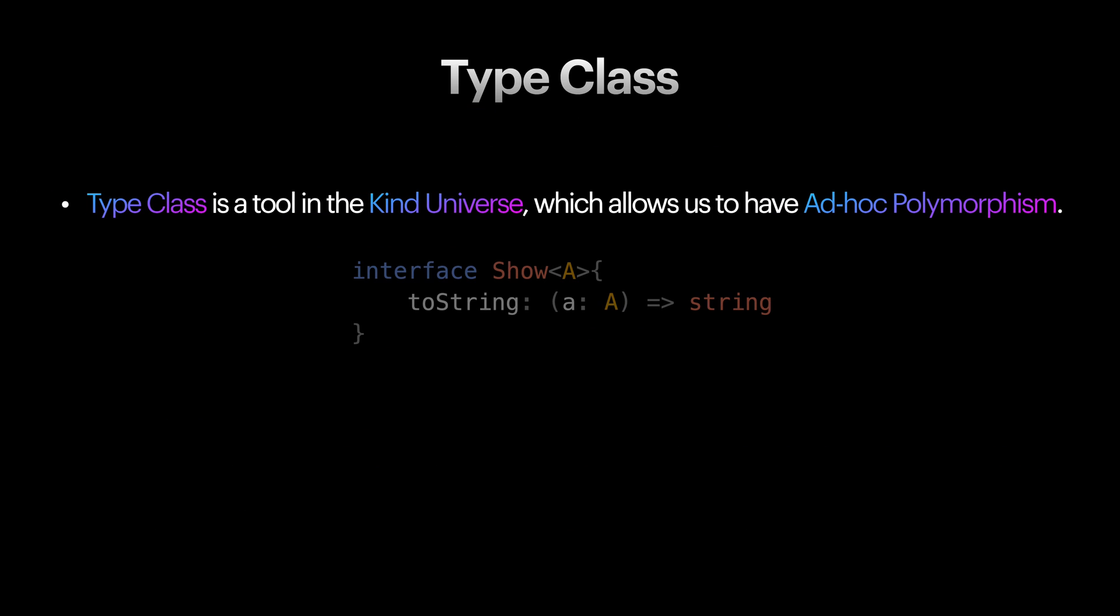So, type class is a tool at the kind level that lets us have ad hoc polymorphism. It allows us to group types and type constructors that have same behaviors. More generally, type class provides a way to define constraints on group of types or type constructors based on their behavior, allowing us to write generic functions that work on any type or type constructor satisfying those constraints.